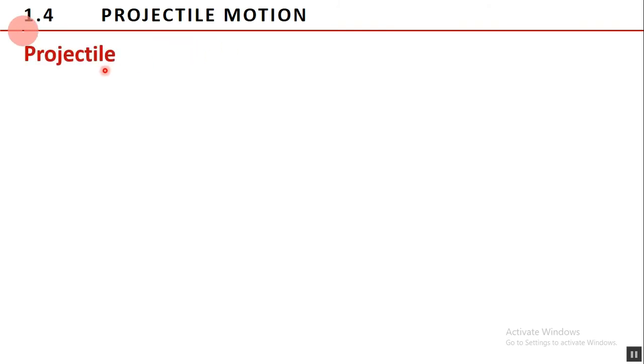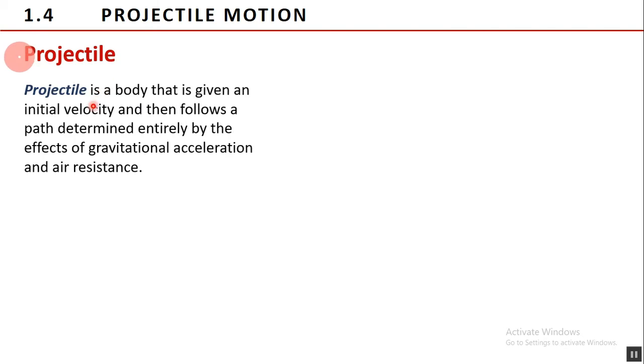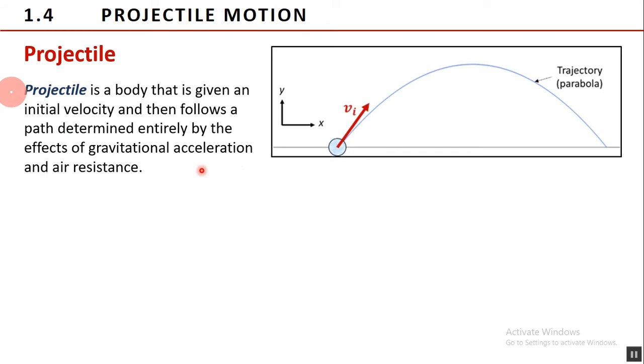Now let us begin with projectile motion. Projectile is a body that is given an initial velocity and then follows a path determined entirely by the effects of gravitational acceleration and air resistance. It is a combination of horizontal and vertical motions. In our discussion, we will consider the following assumptions.